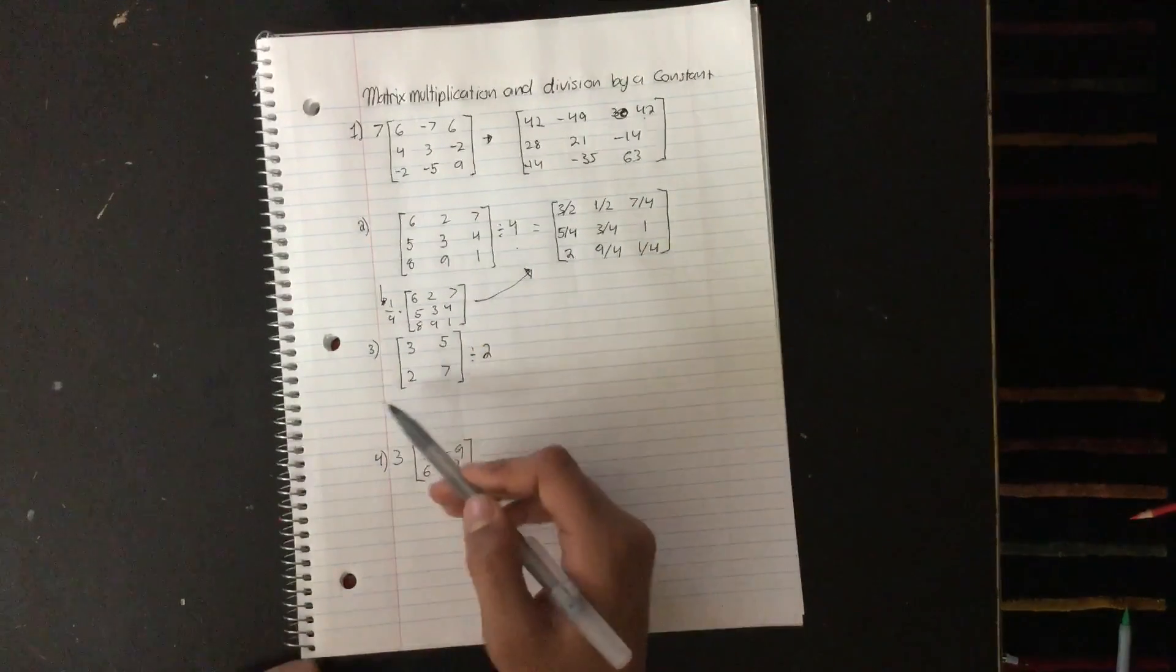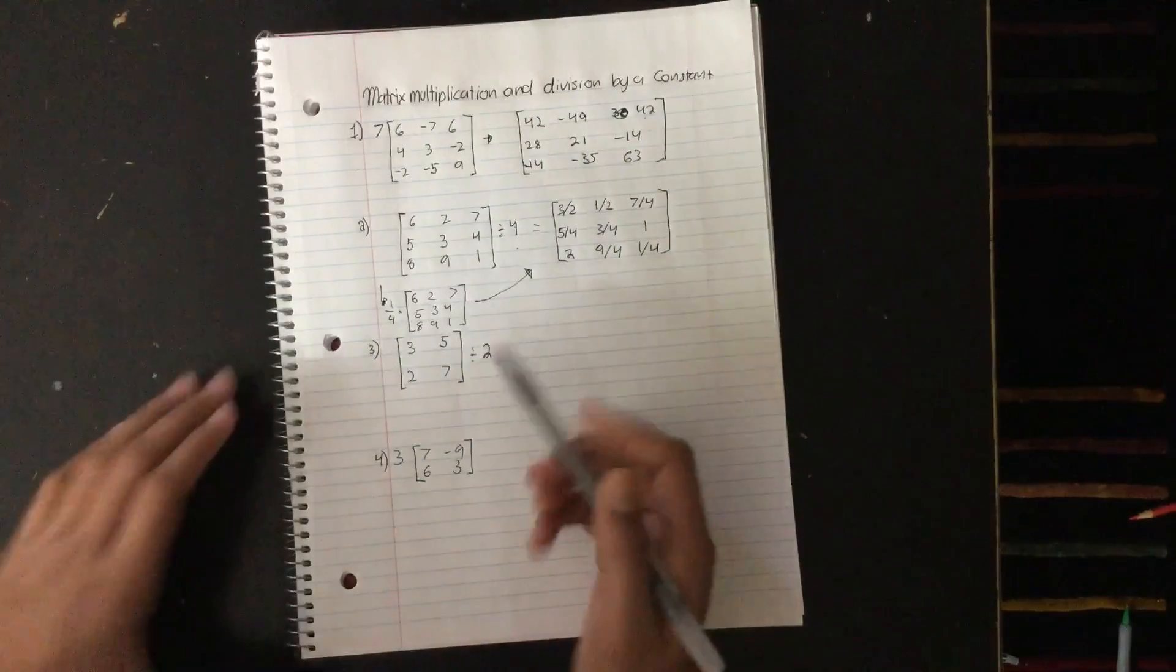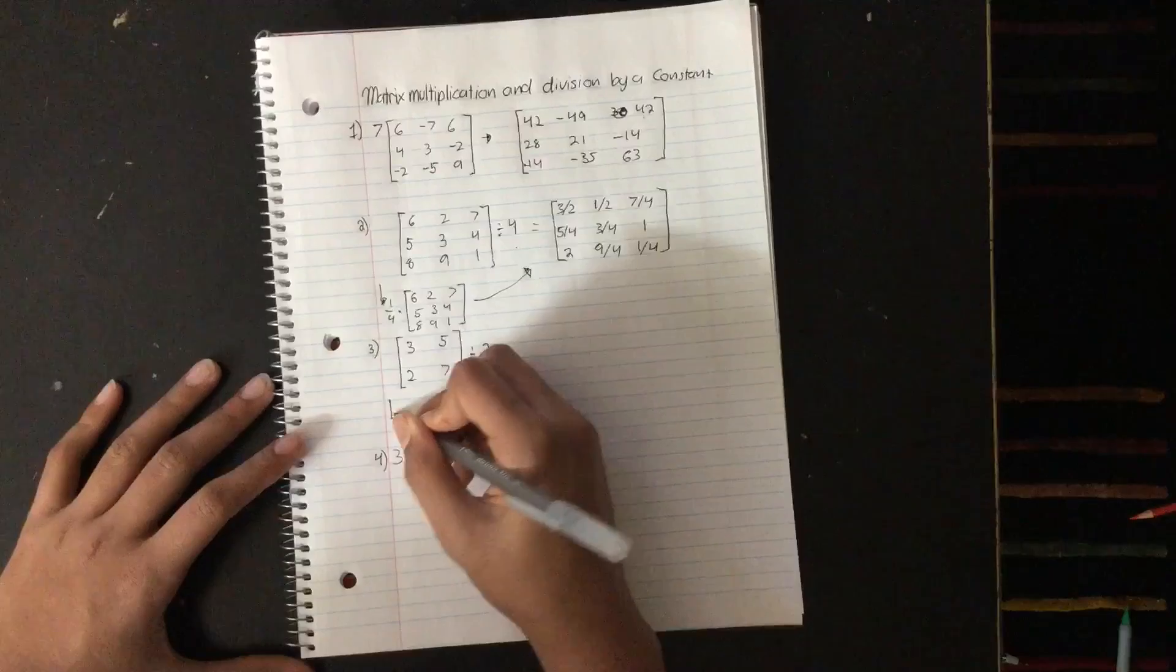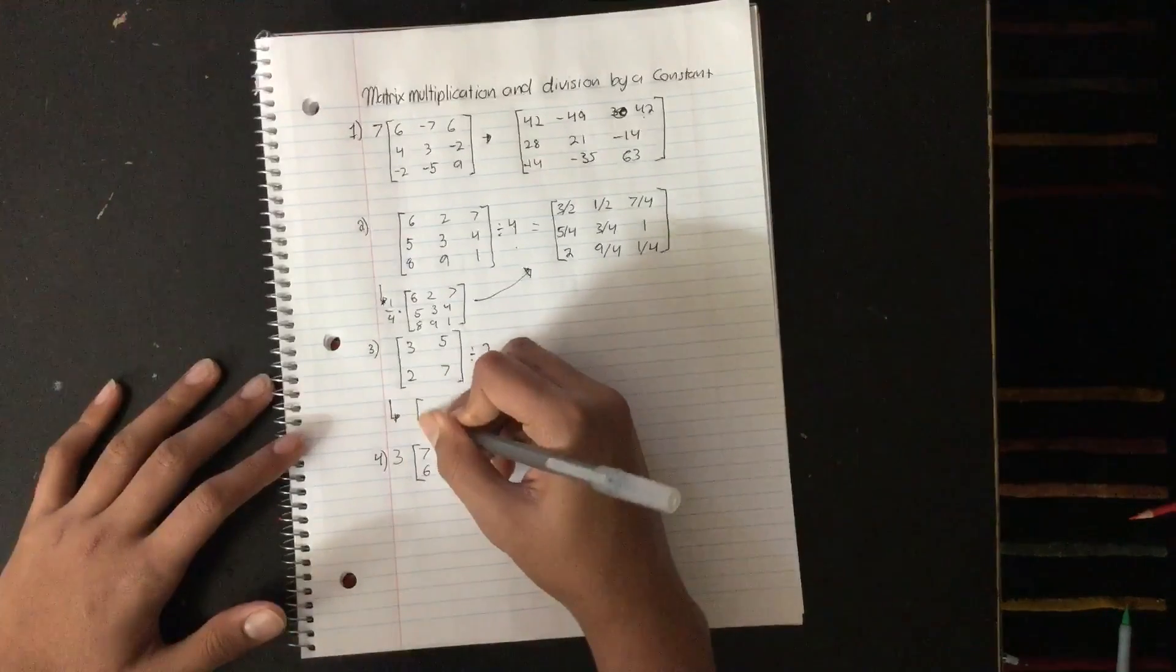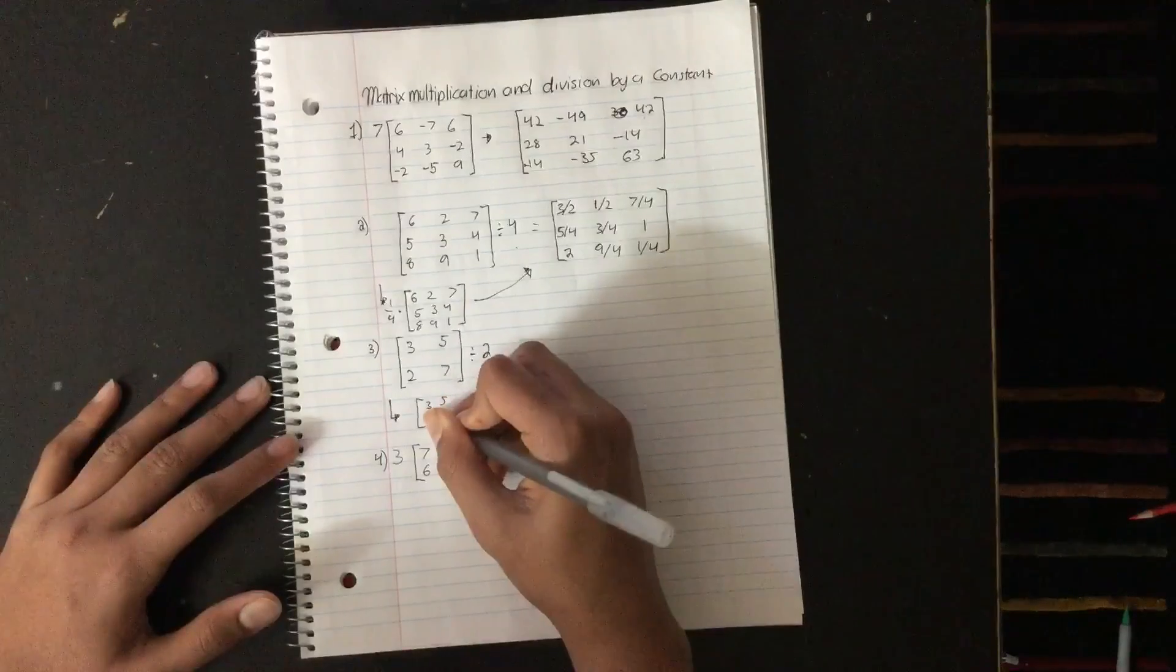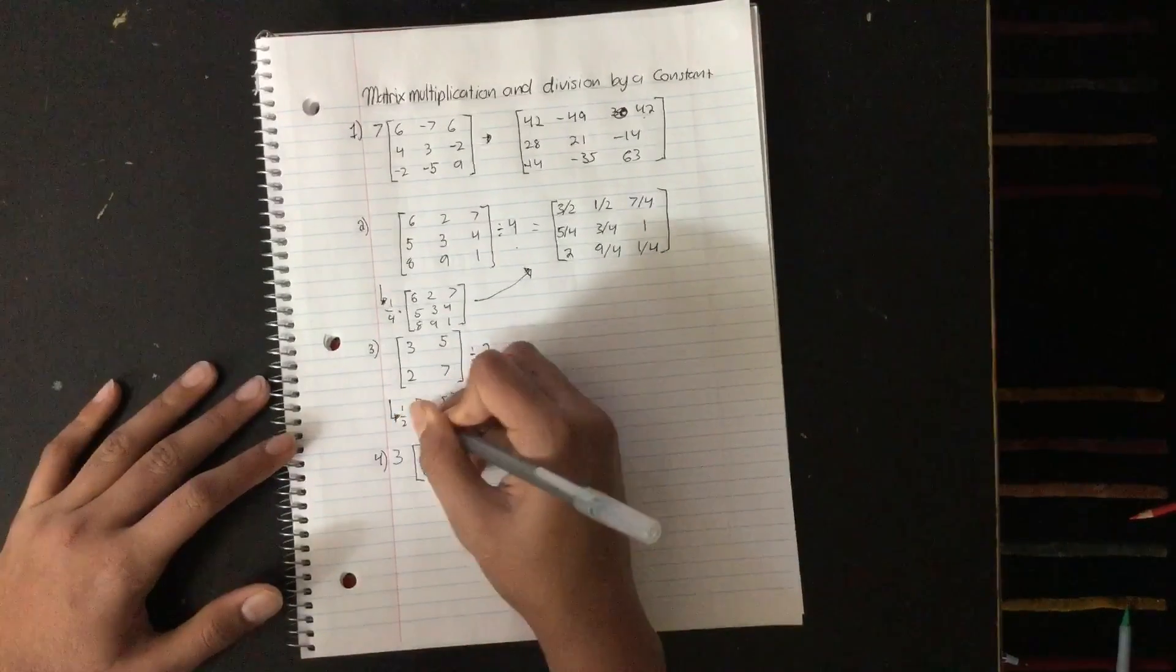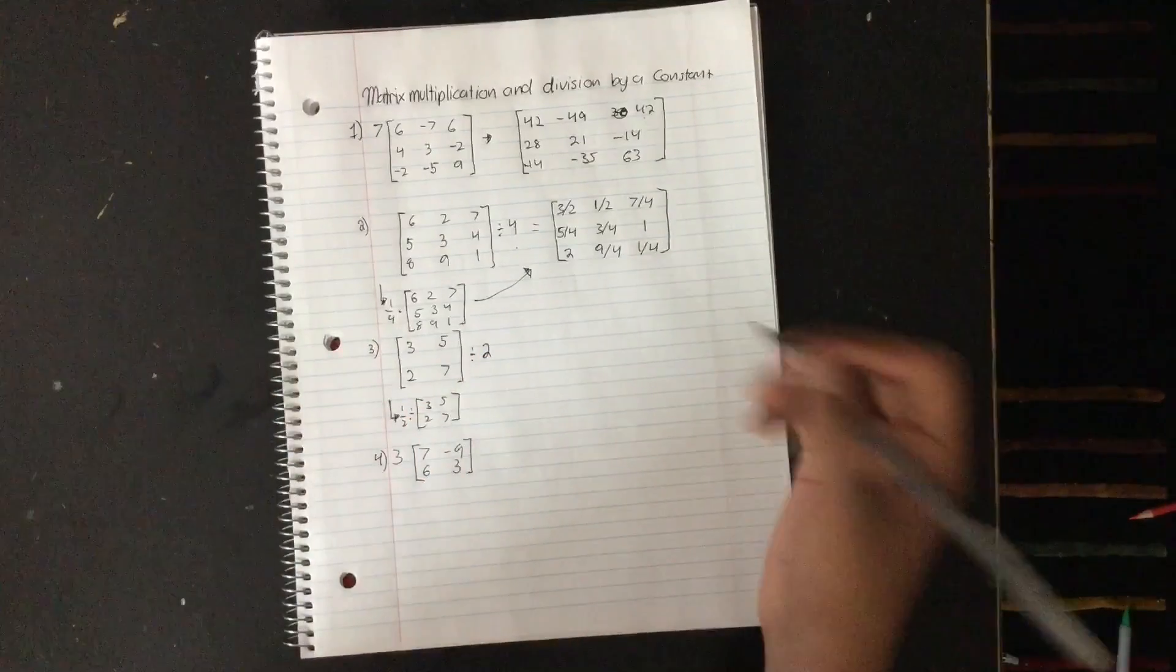So next here we have 3, 5, 2, 7, this 2 by 2 matrix, divided by 2. So again, just use my little tip. It makes it a little more easier to visualize. And so 3, 5, 2, and 7. And then you multiply it by 1 half because the 2 goes into the denominator.